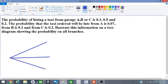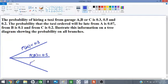As shown, on one of the branches we write the probability of A that will be equal to 0.3. And the other branch we write the probability of B which is 0.5. And the other branch we write the probability of C which is 0.2.